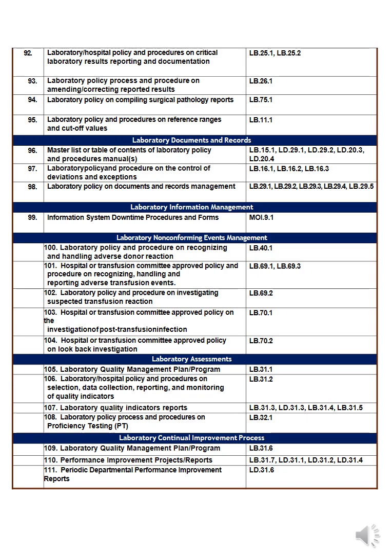Examples of improvement projects include critical test or panic values, safety, infection control, sample delivery, results reporting, and timing. Anything where numbers are not good or the situation is unsatisfactory can be made an improvement project. Number one hundred and eleven is the periodic departmental performance improvement report — periodic reports (annual, bi-annual, monthly, or quarterly) on improvement initiatives, activities, and projects, showing whether progress is being made.